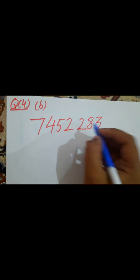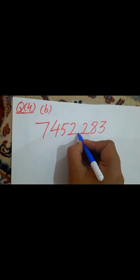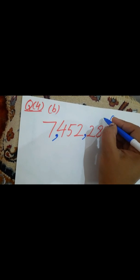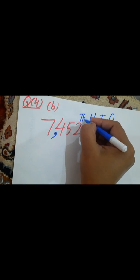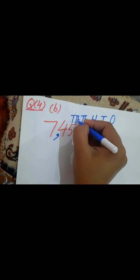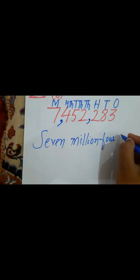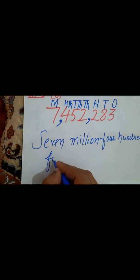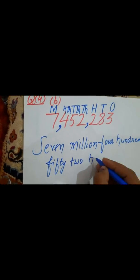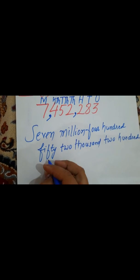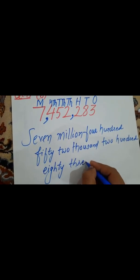Now the B part of question number 4: insert commas according to the international system. Insert comma after every 3 digits from the right, then skip 3 digits. The digit positions are: ones, tens, hundreds, thousands, ten thousands, hundred thousands, millions. I will write: 7 million, 442 thousand, 283.